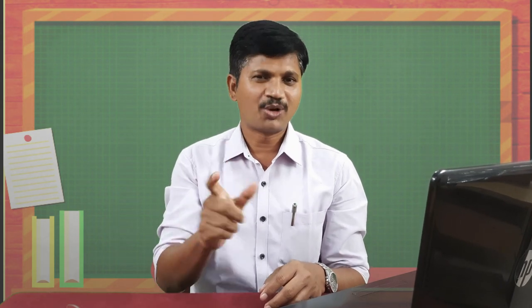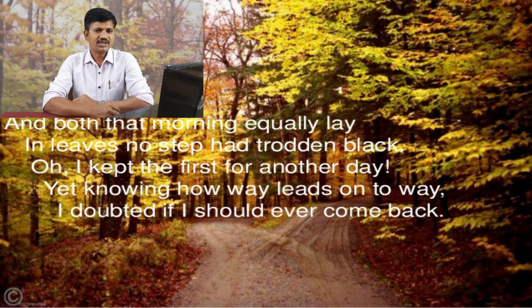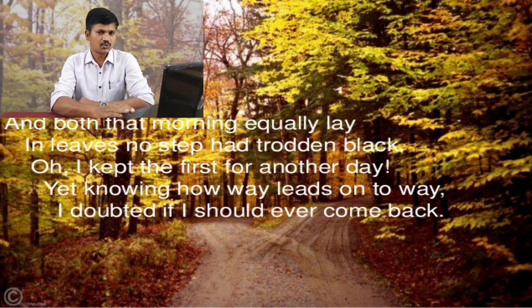He decides to take the road covered by the grassy undergrowth, where people have not much traveled. Now let us look at the third stanza: 'And both that morning equally lay, in leaves no step had trodden black, oh, I kept the first for another day, yet knowing how way leads on to way, I doubted if I should ever come back.' After having chosen the second road — because as stated in the second stanza, he prefers the road less travelled by many people — he looks for the road not traveled by many and feels it is a better claim for him.